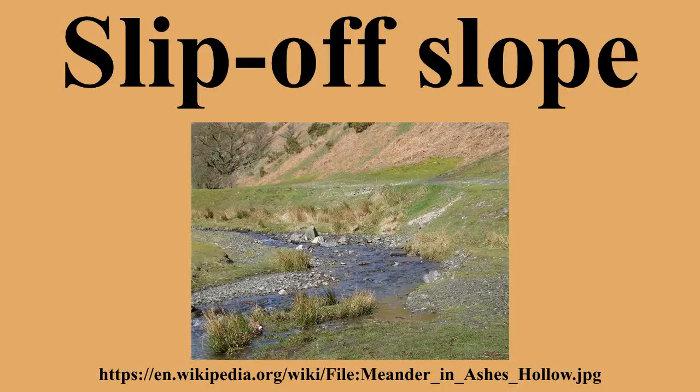Erosion processes cause the bends in a river to migrate over the course of time. If two cut banks are eroded over time until they meet, the river cuts through the neck, usually leaving an oxbow lake.